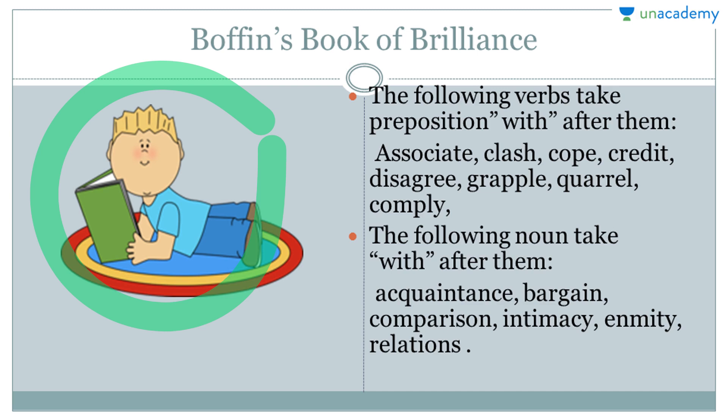There are also the following nouns that take 'with' after them: acquaintance with, bargain with, comparison with, intimacy with, enmity with, and relations with. These are the nouns that take 'with' after them. That was it for Boffin's Book of Brilliance.